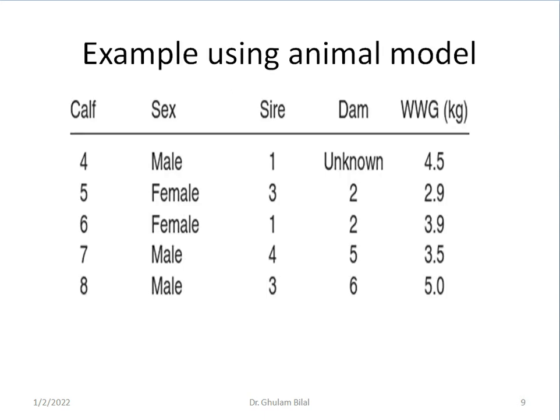I will give a small example which was quoted by Misztal. We have five animals, three male, two female. They have sire and dam and they have pre-weaning gain: 4.5 kg, 2.9, 3.9, 3.5.